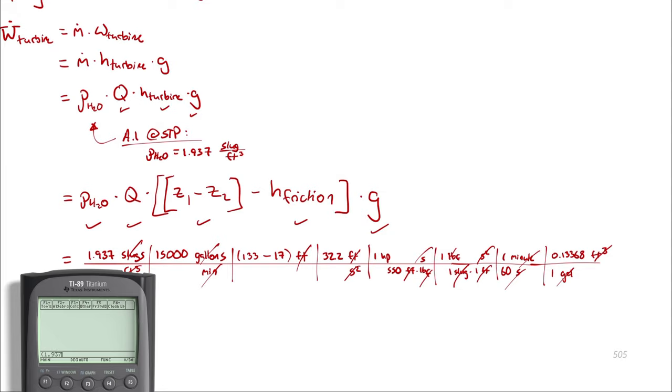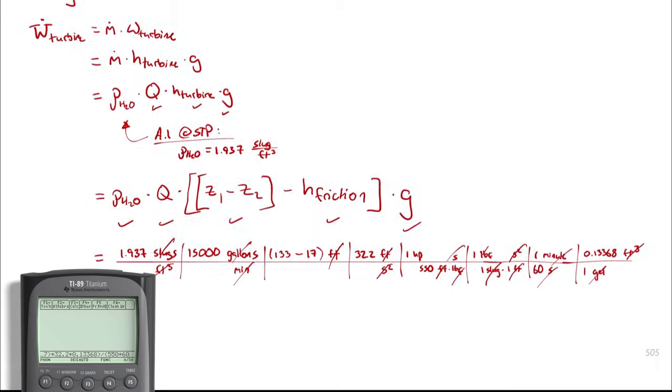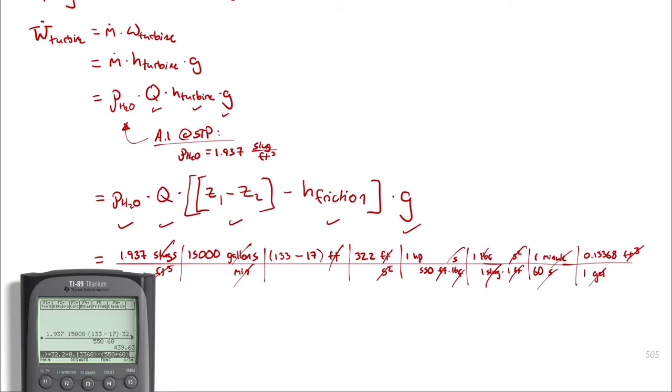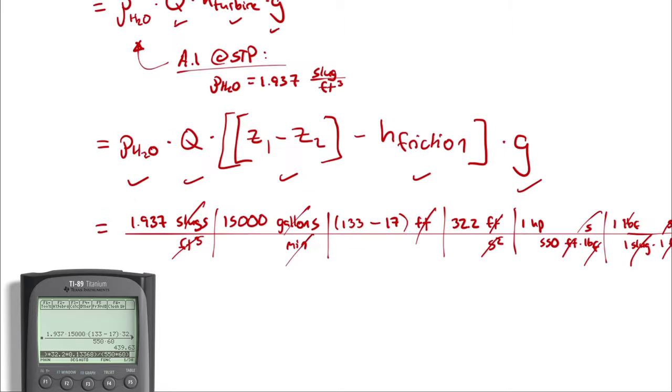I'm going to take 1.937 times 15,000 times 133 minus 17 times 32.2 times 0.13368 divided by 550 times 60, that was all the denominator, then I get 439.63.